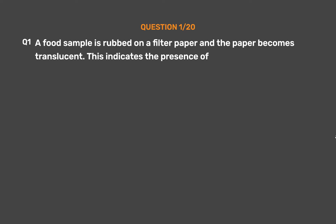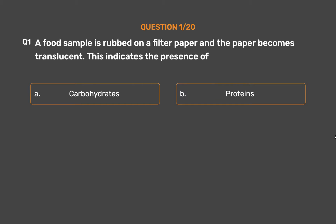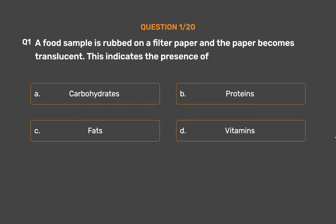Question number 1. A food sample is rubbed on a filter paper and the paper becomes translucent. This indicates the presence of: Option A - Carbohydrates, Option B - Proteins, Option C - Fats, Option D - Vitamins.